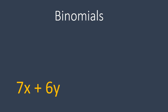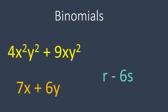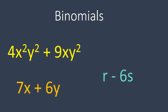A quick recap on what a binomial looks like. A binomial is any set of two monomials joined together with addition or subtraction. For example, 7x plus 6y — they can't join together because they're not like terms, so they're joined with addition but permanently set as two different terms. Another example: r minus 6s. Or 4x²y² plus 9xy². Any time the variables are different, you're going to have a binomial like that.